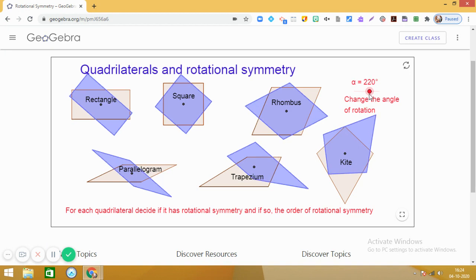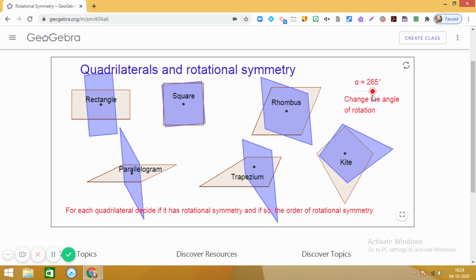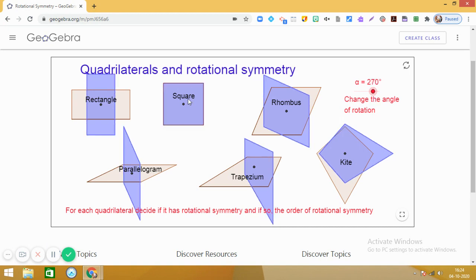Okay, let us continue the process and go up to 270 degrees. Okay, I am now, yes, waiting at 270 now. For a rectangle, no. Square, yes.